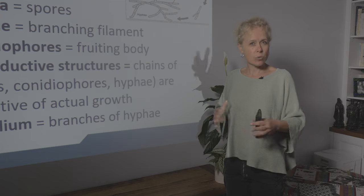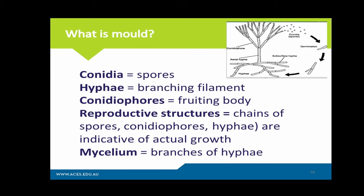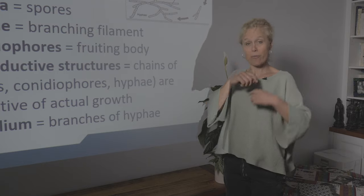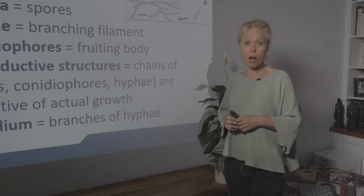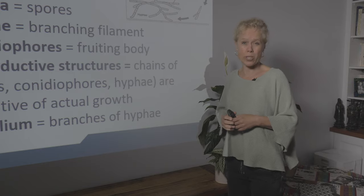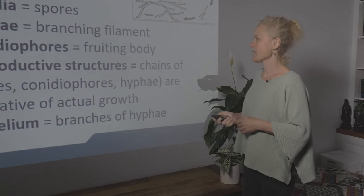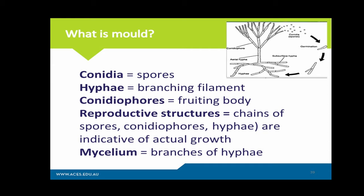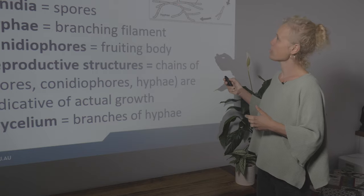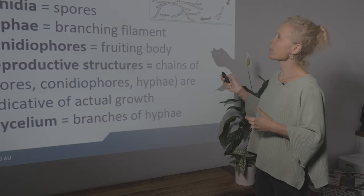To recap on fungi: we have conidia, or spores, hyphae which are branching filaments that come from the spores, and conidiaphores which are considered to be specialised hyphae or reproductive structures, and mycelium which is the branches of hyphae. Conidiaphores are basically specialised reproductive structures just before they become spores.